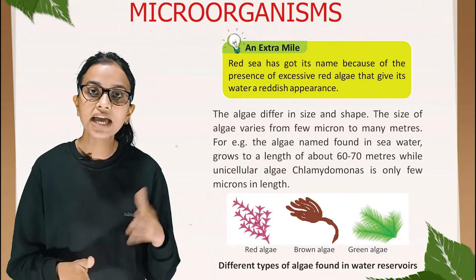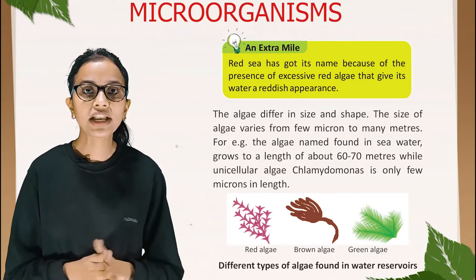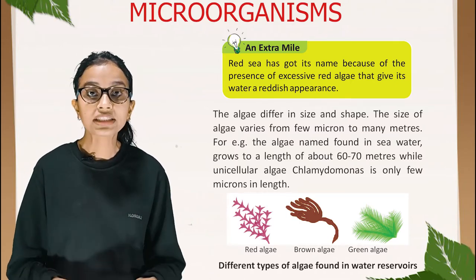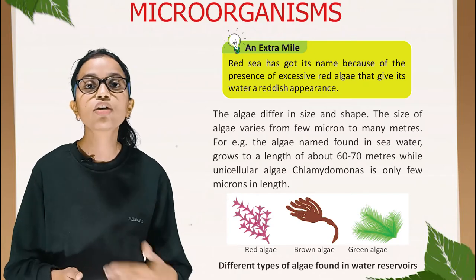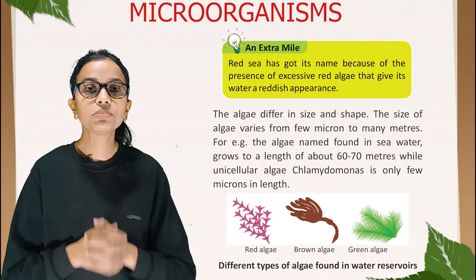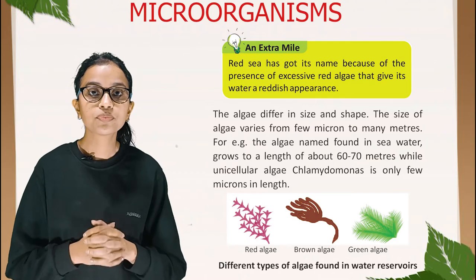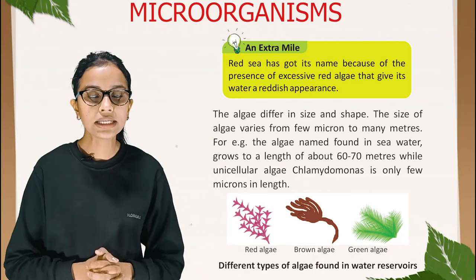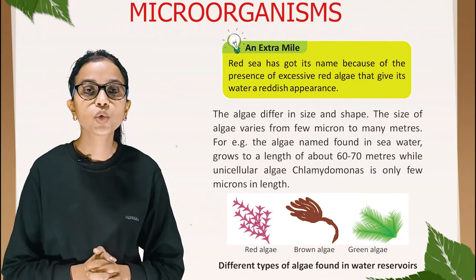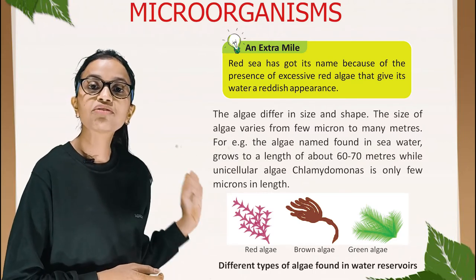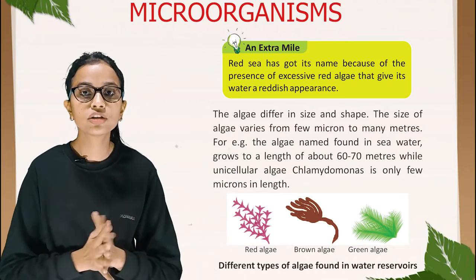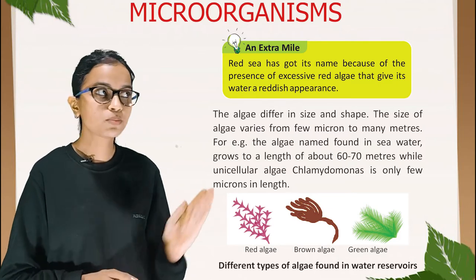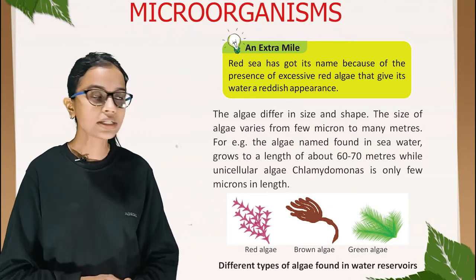Algae differ in size and shape. Their size varies from a few microns to many meters — for example, the seaweed found in seawater grows to a length of about 60 to 70 meters, while the unicellular algae Chlamydomonas is only a few microns in length. These pictures show different types of algae found in water reservoirs: red algae, brown algae, and green algae.